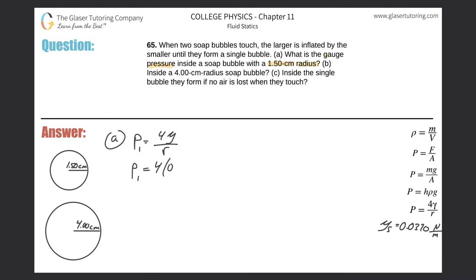It's going to be 4 multiplied by that surface tension of 0.0370, all divided by the radius. I'm going to convert this into meters so we can get pascals - move the decimal two places to the left - so 0.0150. Throw it into the calculator: 4 times 0.037 divided by 0.015, and we get 9.87 pascals. Letter A is done.